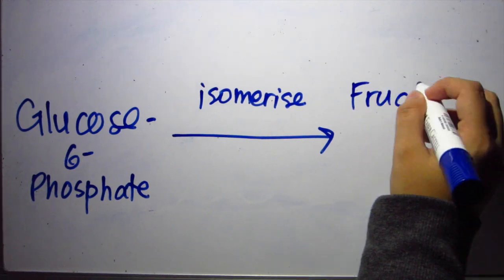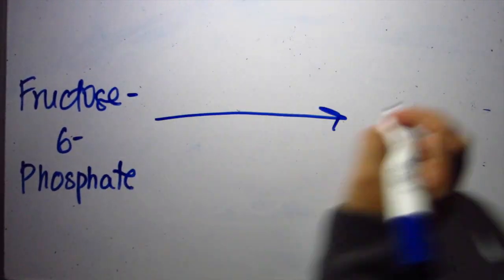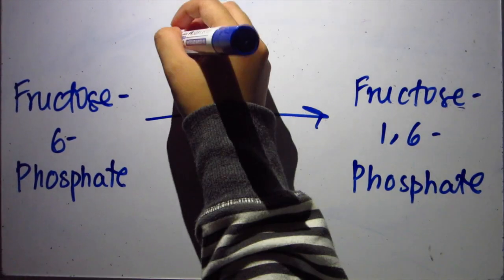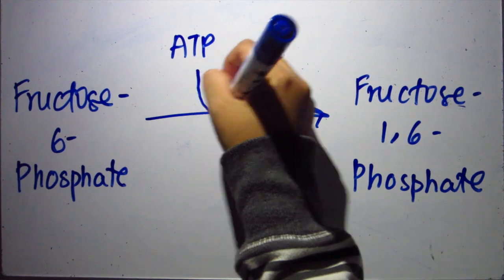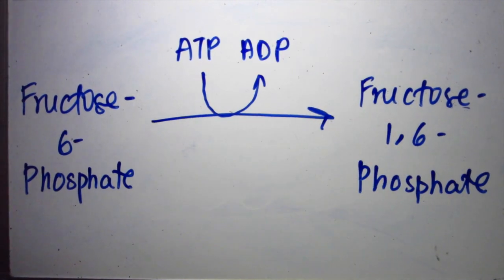Isomerase converts it to fructose-6-phosphate. Then to fructose-1,6-bisphosphate. Another ATP is used and a phosphate is produced.